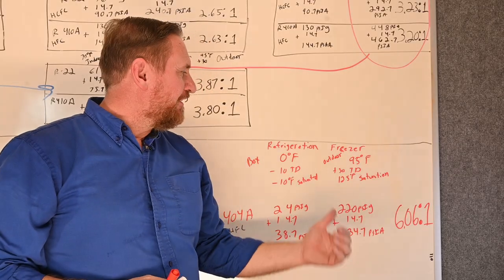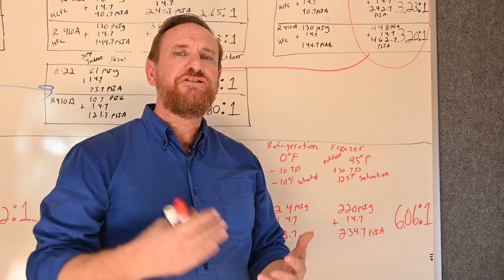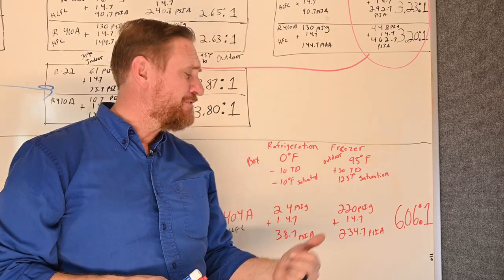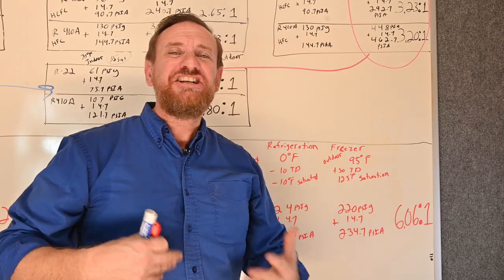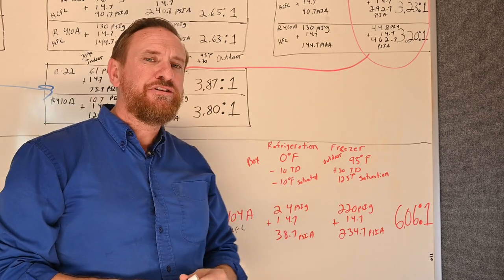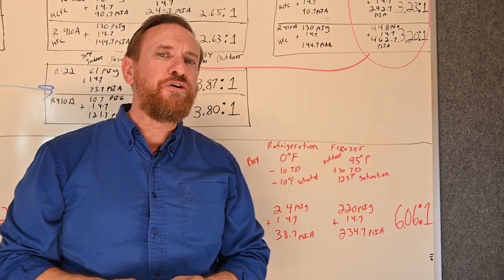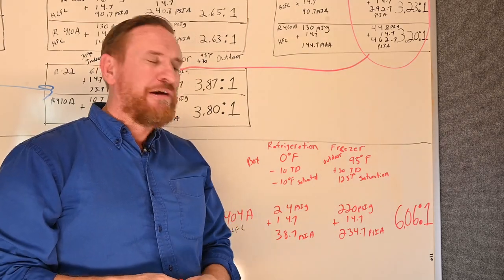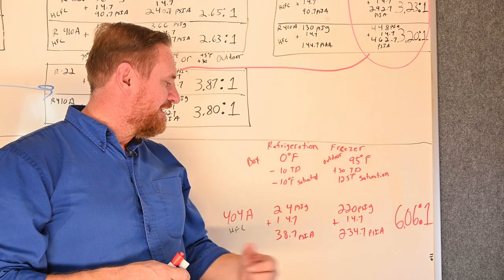Now let's take a look at a walk-in freezer. Our box temperature is about zero degrees Fahrenheit. We know we have a 10-degree temperature difference between the box temperature and the refrigerant. So zero degrees minus 10 degrees ends up with a negative 10 degree saturated temperature. Our refrigerant is boiling at minus 10 degrees Fahrenheit — changing state from liquid to vapor, absorbing heat, at minus 10°F. If we take HFC 404A and find that saturated temperature of minus 10, you should come out with about 24 PSI suction pressure. The blue gauge would be at 24 PSI gauge. We add atmospheric pressure 14.7, so 24 plus 14.7 gives us an absolute pressure of 38.7 PSI.